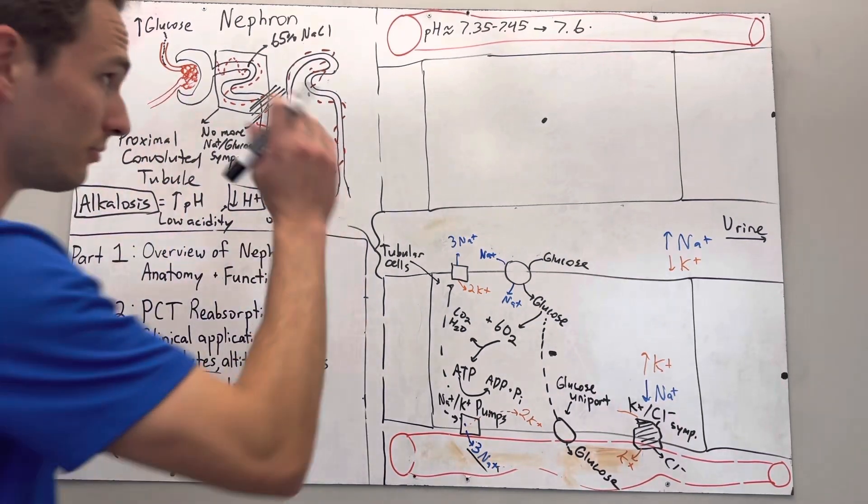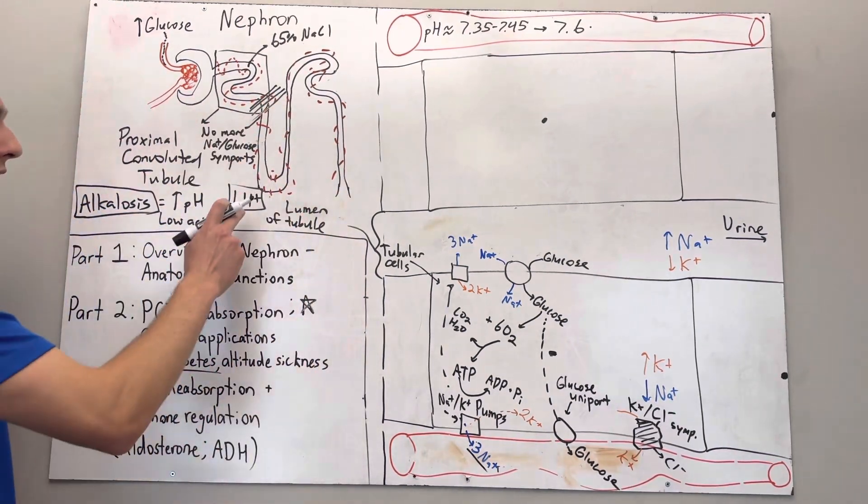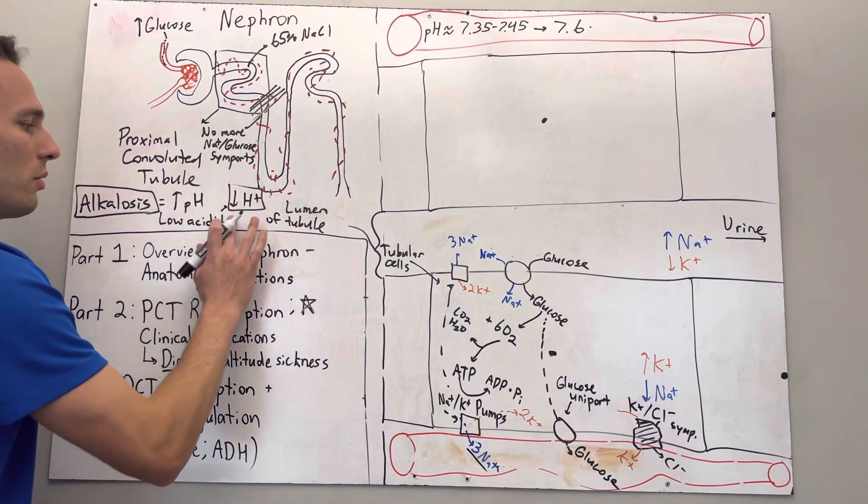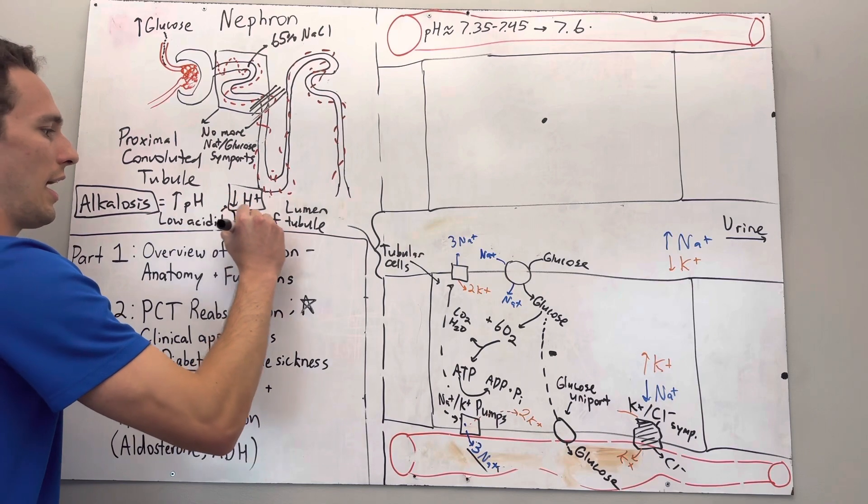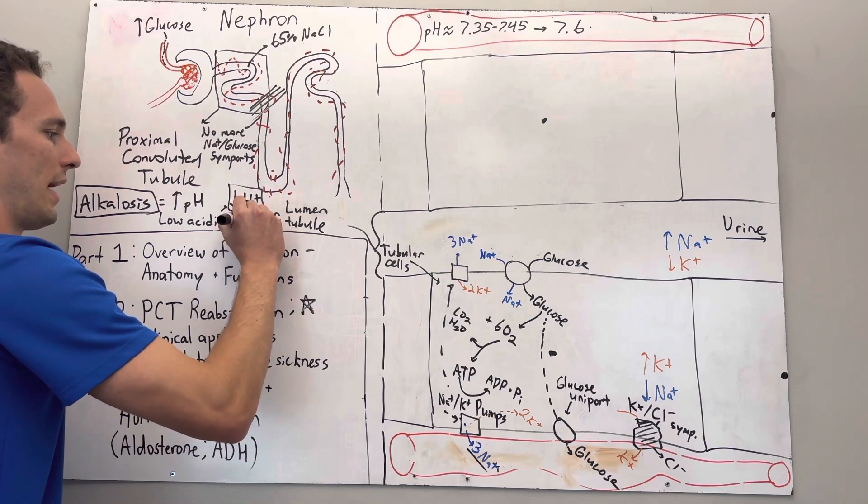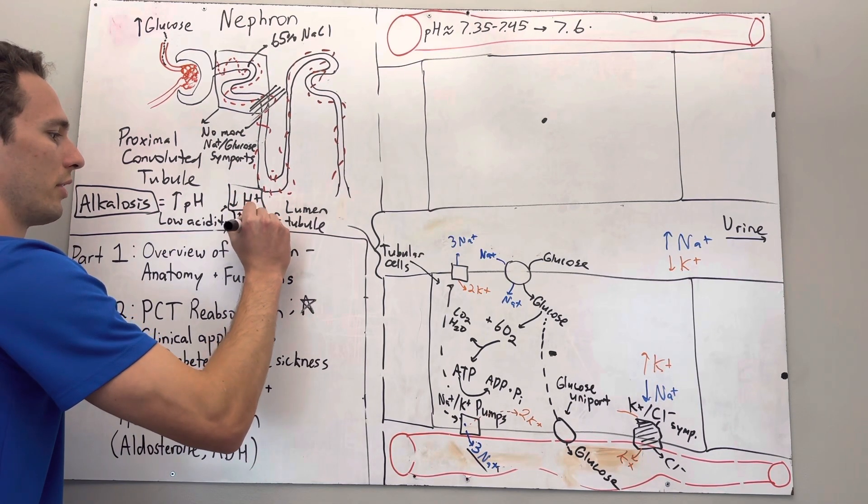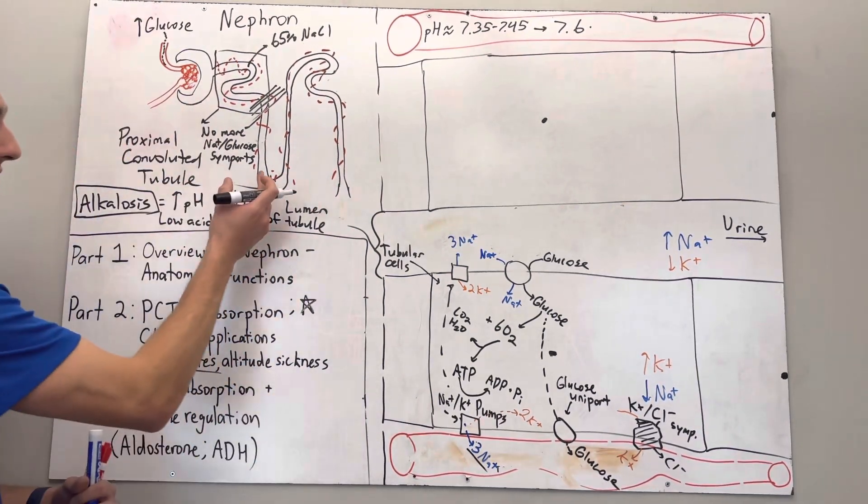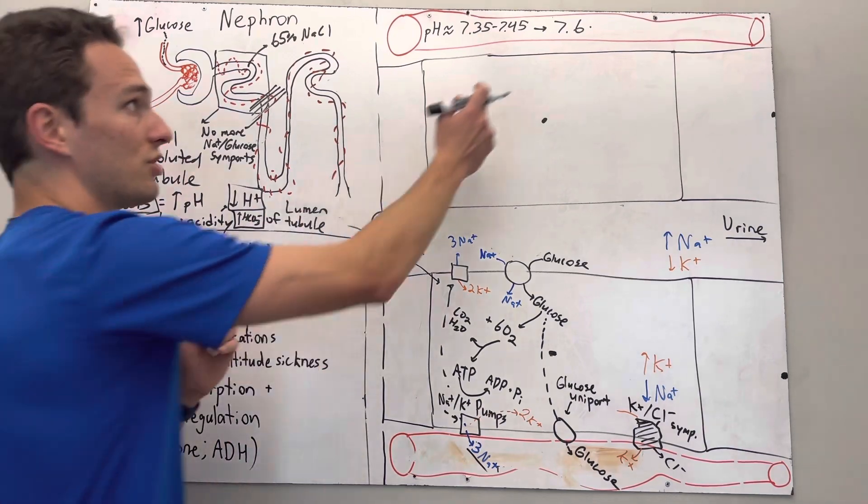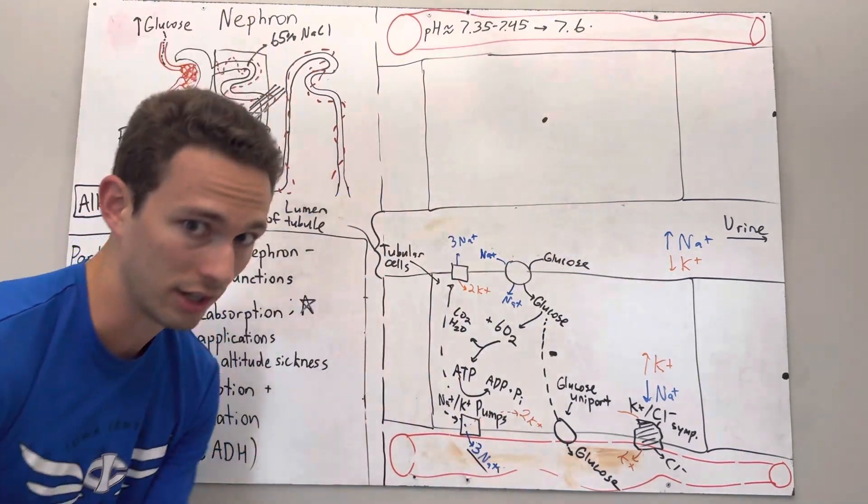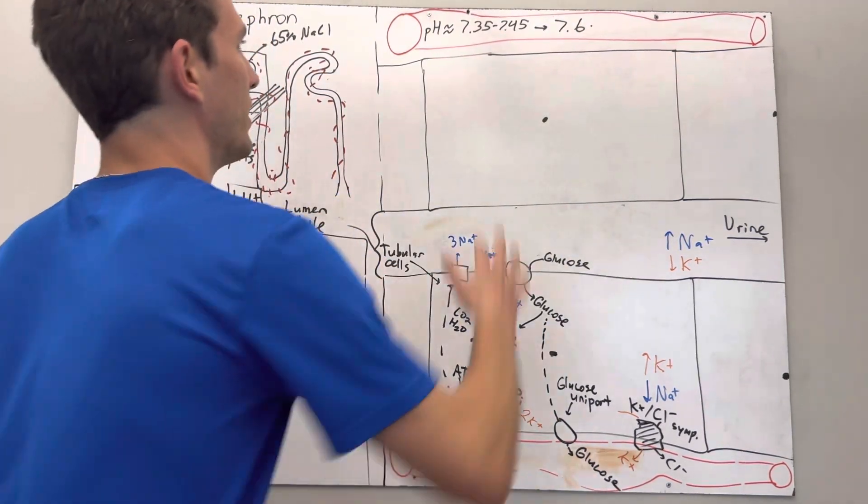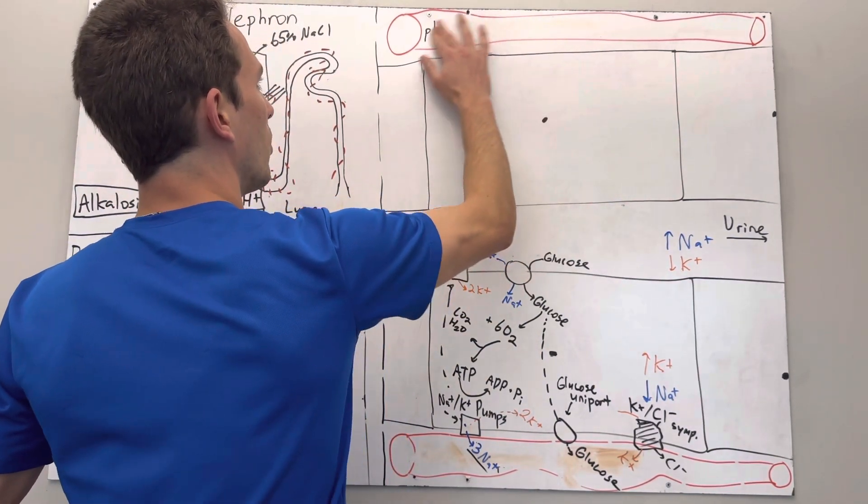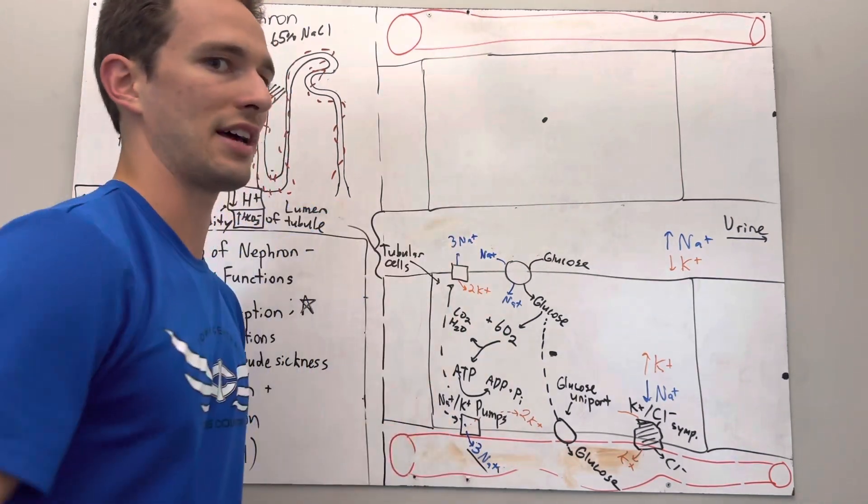I told you that alkalosis occurs when we have low hydrogen ions. It can also occur if we have high amounts of bicarbonate HCO3 minus. Bicarbonate acts as a buffer, basically takes away some of the hydrogen ions and makes your blood more alkaline. So what's happening here? Let's step back a little bit and figure out why it's happening as well as how we can treat it.